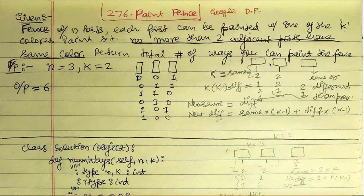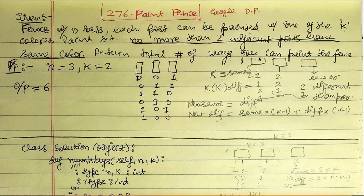Let's think about the base case with just two pillars. The number of ways to paint the second pillar the same color as the first — for example 1-1 or 2-2 — means same equals k. For the case when we use a different color on the second pillar, we have k choices for the first and k-1 choices for the second, so diff equals k*(k-1). For n equals one, we simply have k choices.